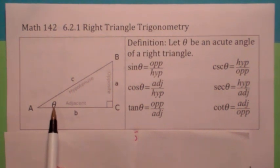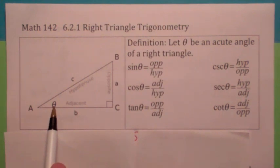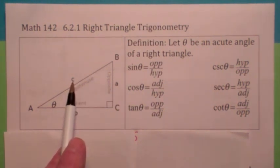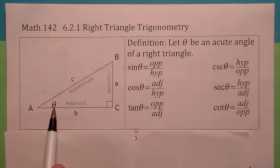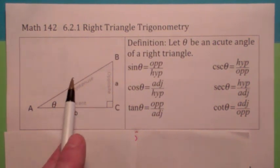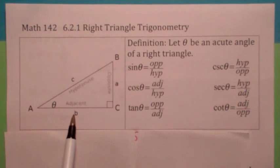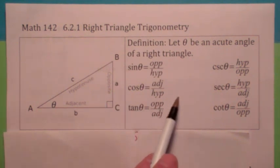This is how we define the trigonometric functions for right triangles. You have to fix this angle theta. The sine of this angle theta is defined to be the side that's opposite theta divided by the hypotenuse, so it would be a over c. The hypotenuse is the longest side. The cosine of theta is the side that's adjacent to theta over the hypotenuse, which would be b over c. The tangent of theta would be the ratio of the side that's opposite theta divided by the side adjacent — a over b.